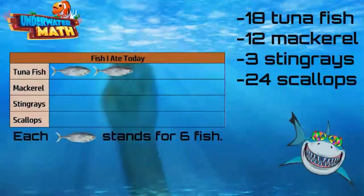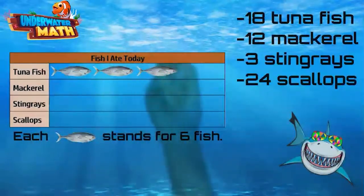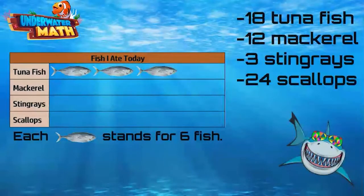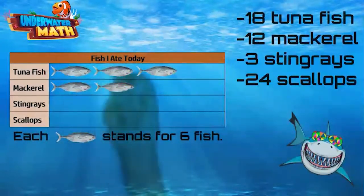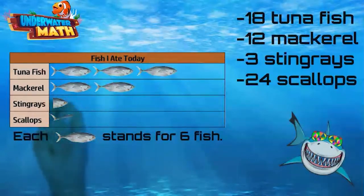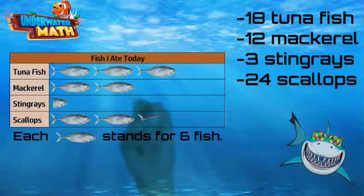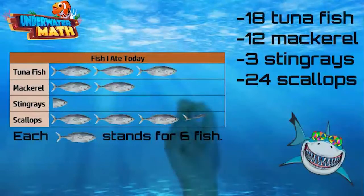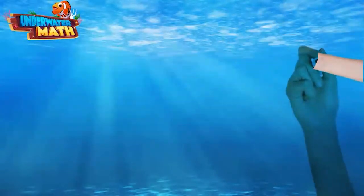For mackerel, we need six, twelve — only two fish pictures. Remember, for the stingrays we only need half a fish picture, since three is half of six. Last, for the scallops, we need six, twelve, eighteen, twenty-four — we need four fish pictures. You did great work today!